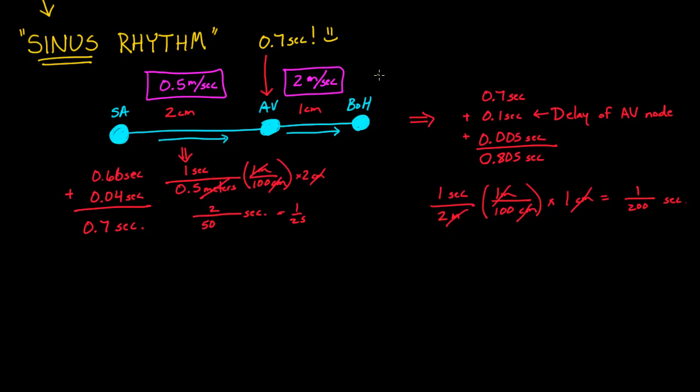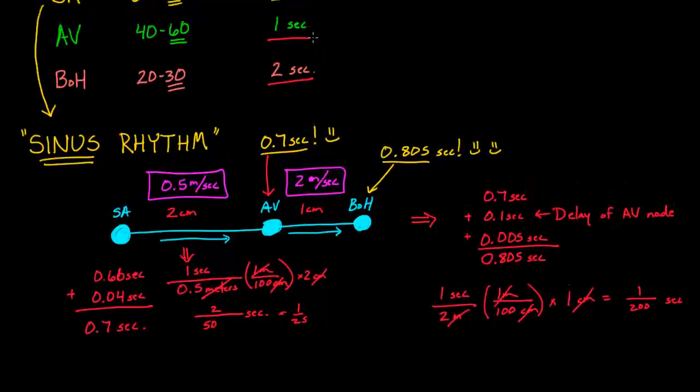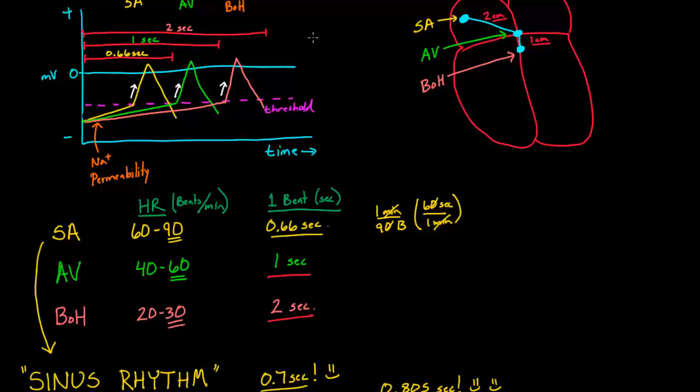This is how long it takes to get to the bundle of His. 0.805 seconds. Now we're really happy because we were able to beat out both the AV node. I guess from the perspective of the SA node, if SA node cells got happy, that's what they would look like. So it basically gets there really quickly is the point. 0.7 seconds and 0.805 seconds. So that explains at least why you never really see the AV node or the bundle of His cells firing.